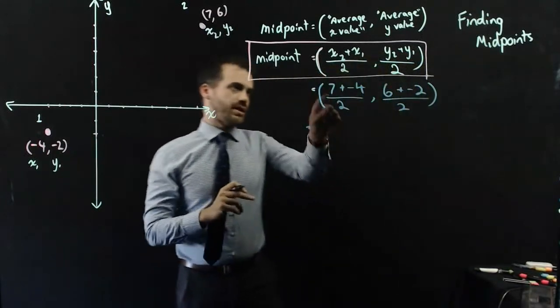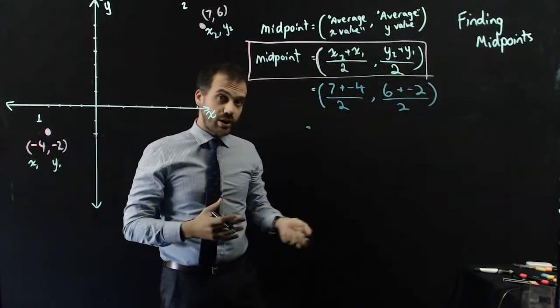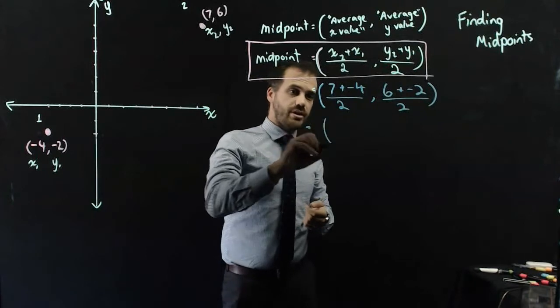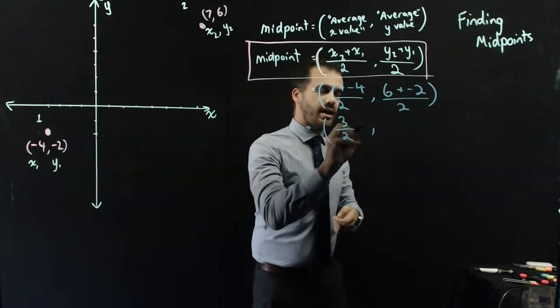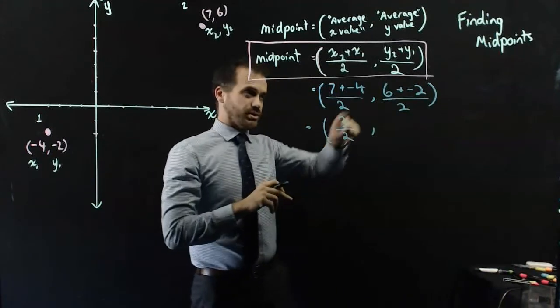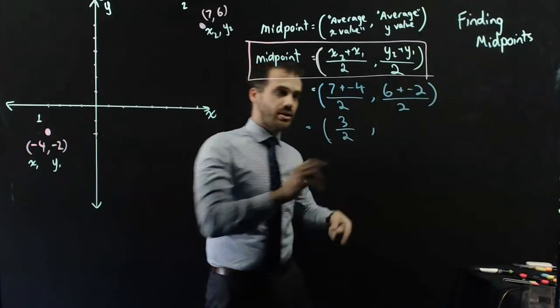So 7 plus negative 4, that's the same as 7 minus 4, which is 3 over 2, and 6 minus 2, or 6 plus minus 2 is the same as 6 minus 2, which is 4.